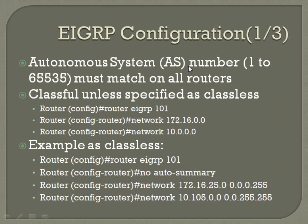It's classful unless specified as classless. The configuration would be 'router EIGRP' followed by your AS number — and again, it must match on all routers, in this case 101. That jumps you into router configuration mode, then you put your networks in. Since it's classful, you don't need to worry about subnet masks or wildcard masks — just 'network' and then each network IP.